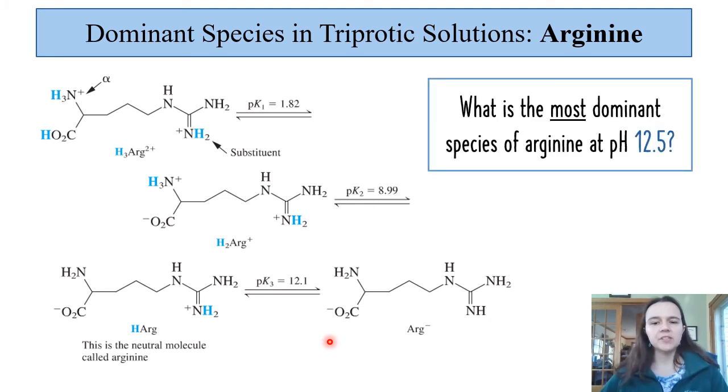So what is our most dominant species of arginine at pH 12.5? We're going to compare that pH to our pKa values, and it is greater than pH of 12.1. So I would point my arrow right at arg- and answer that we have the arginate ion.